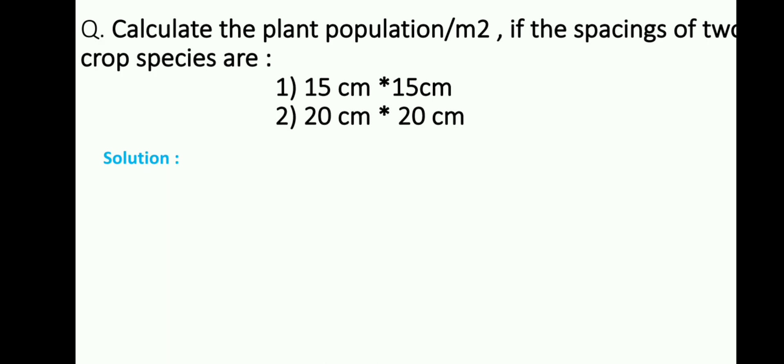For that, the spacing given is 15 cm into 15 cm. Now we have to calculate the canopy coverage of the crop by multiplying both the spacings: 15 into 15 equals 225 cm square, or we have to convert it into 0.0225 meter square.